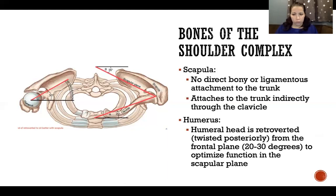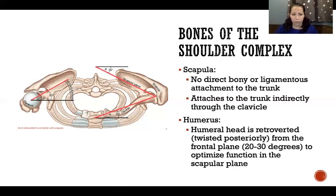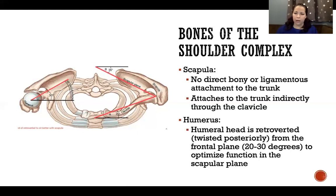Retroversion of the humeral head is healthy and normal — we all have it. It can be made more extreme but is not considered a problem until it's very extreme. In overhead athletes — like throwers, volleyball players, and similar — they'll have a greater angle of retroversion in their dominant arm because they're emphasizing that retroversion every time they go back into external rotation and then forward into internal rotation. They're putting a lot of force through the bone that emphasizes that retroversion and causes it to become more extreme.